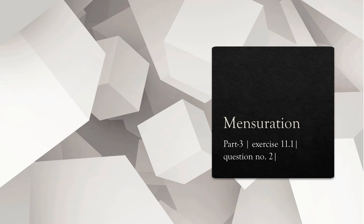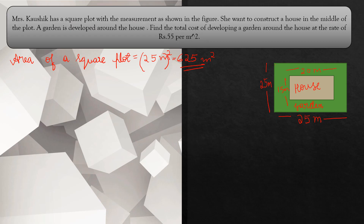Hello students, this is Mensuration Part 3, Exercise 11.1, Question Number 2. I'm Pratika and I'm going to teach 8th standard Mensuration. Question Number 2: Mrs. Kaushik has a square plot with the measurement as shown in the figure. There is a green color garden and a house.